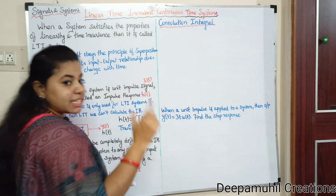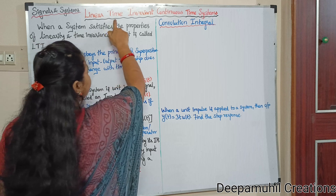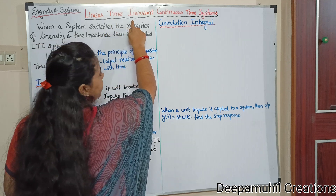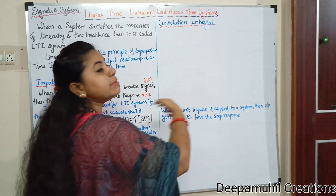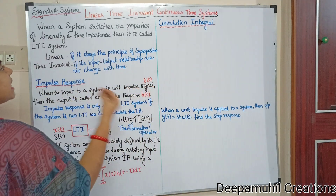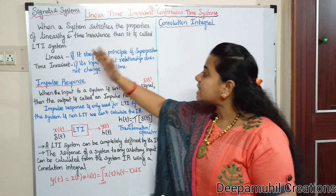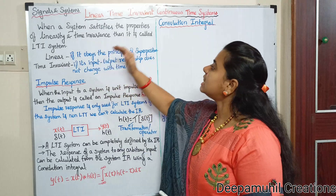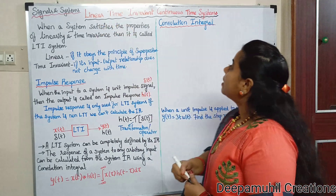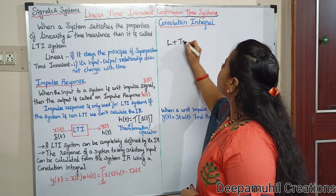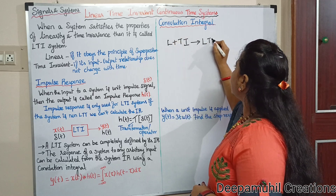In Linear Time-Invariant — L for Linear, T for Time, I for Invariant — Continuous Time Systems: what is meant by Linear Time-Invariant? When a system satisfies the properties of linearity and time invariance, then it is called LTI. That is, Linear plus Time-Invariant — when both two properties are satisfied, that is LTI.